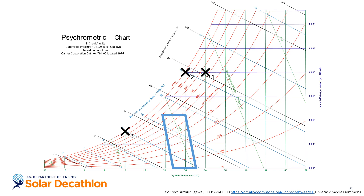We've now dehumidified the air by cooling it to the point where water is removed by condensing into liquid form. This is how most dehumidification processes work, but they result in air that is dehumidified but uncomfortably cold. So the fourth step is a reheat process to heat the air back to a comfortable temperature, moving horizontally to the right on the chart. To get from 30°C and 75% relative humidity to a more comfortable 23°C and 45% humidity, we had to cool, dehumidify, and then reheat the air. This demonstrates how HVAC processes occur to cool and dehumidify air.